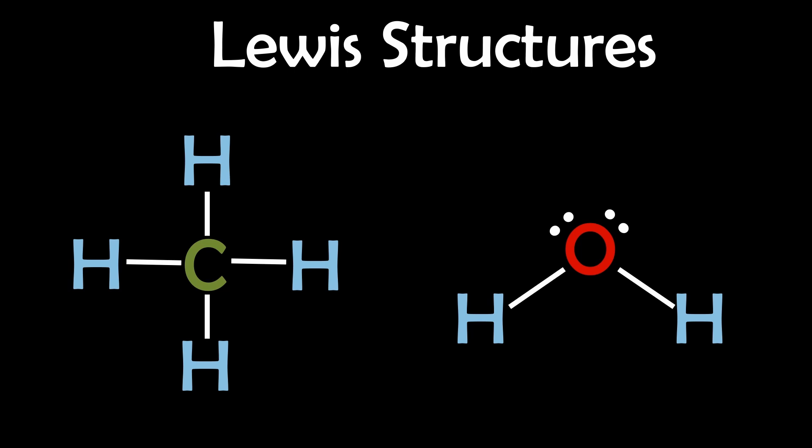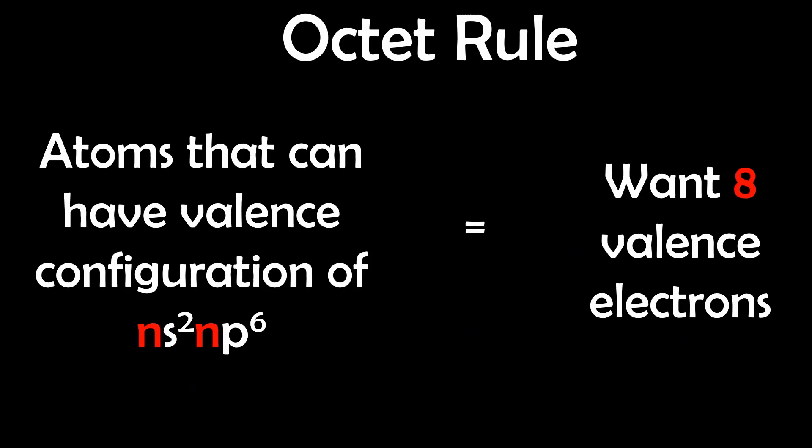When looking at these Lewis structures, you might wonder why carbon is bonded to 4 hydrogens, or why oxygen is bonded to 2 hydrogens and has 2 lone pairs. This is explained by the octet rule.